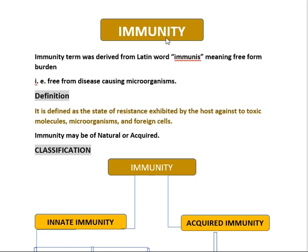Immunity can be defined as a state of resistance exhibited by the animal or human body against toxic molecules, microorganisms, and foreign cells. Simply, the resistance against pathogenic agents exhibited by the host is termed as immunity.